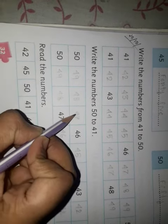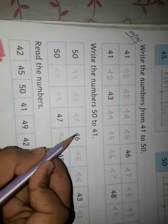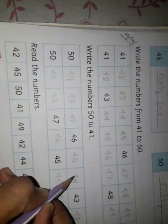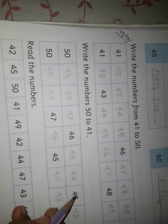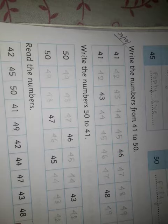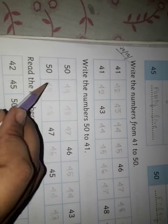Write the numbers from 50 to 41. This is back counting from 50 to 41. So 50, 49, 48, 47, 46, 45, 44, 43, 42, 41.